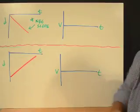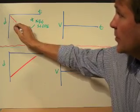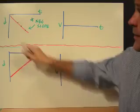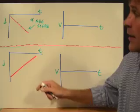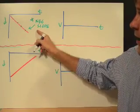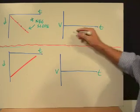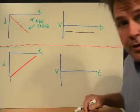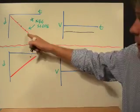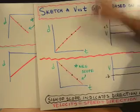Now we're in the fourth quadrant. What's happening to the speed here? The slope of the line is constant, but it's a negative slope. That means our speed is going to be in the negative region and it's going to be constant. The red line has the exact same shape as in the previous example.